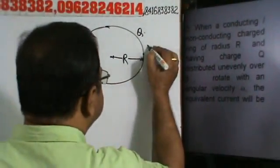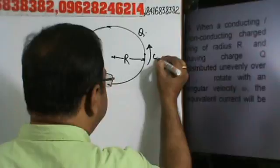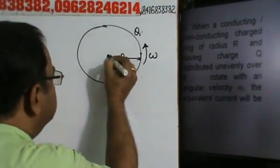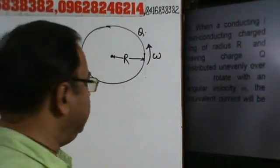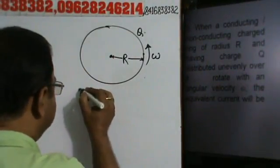And if this ring is moving with an angular velocity of omega, angular velocity omega se, e center ke bow, rotate kar rahi hai. Right? Then equivalent current, then I equivalent kya ho jaagi?